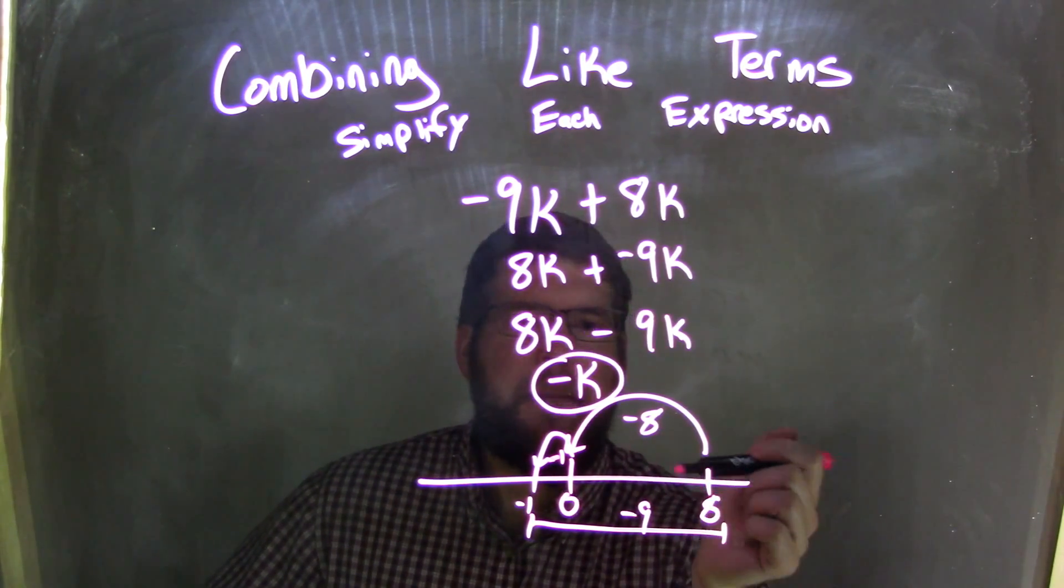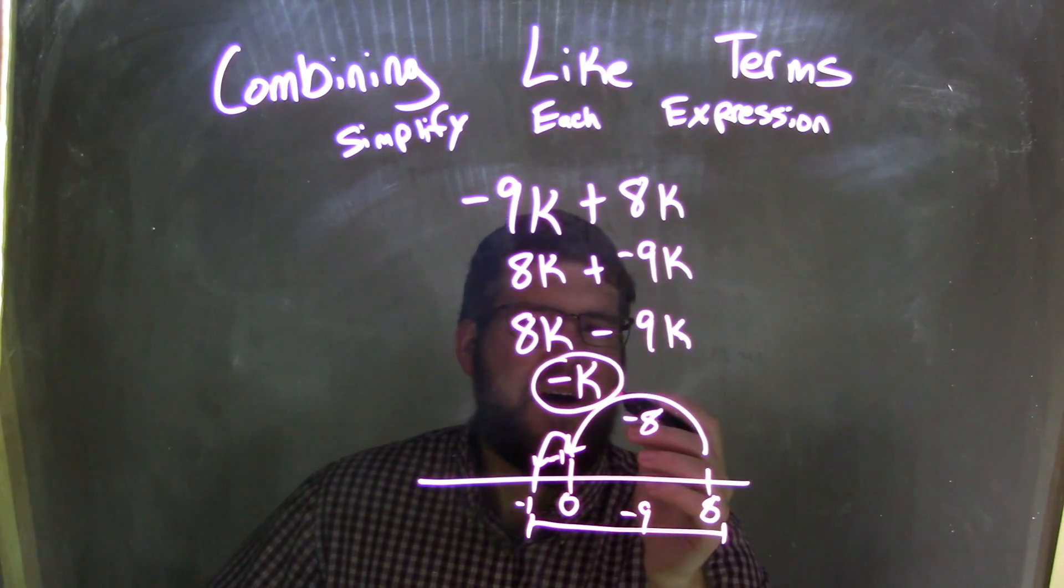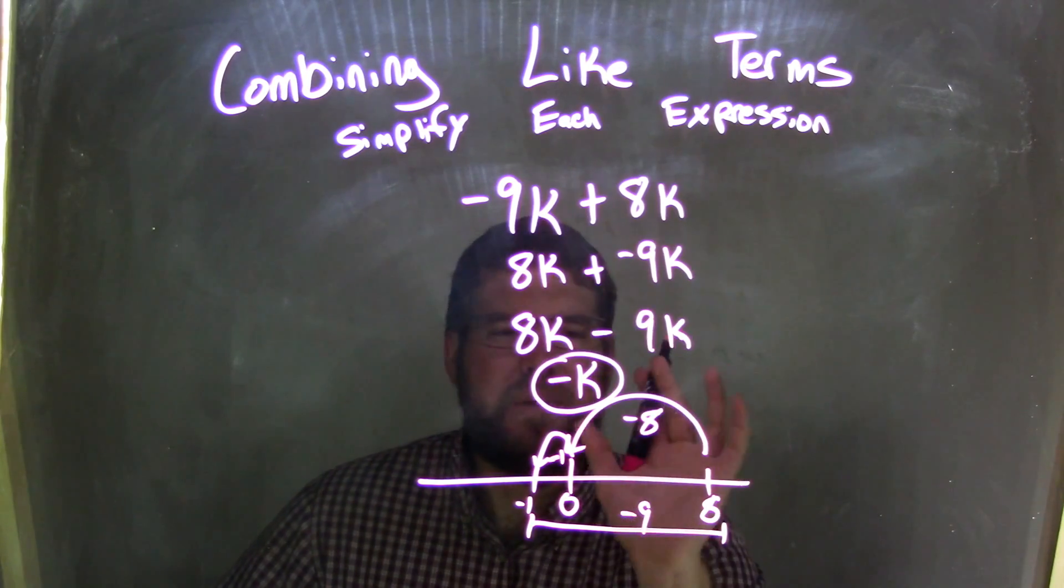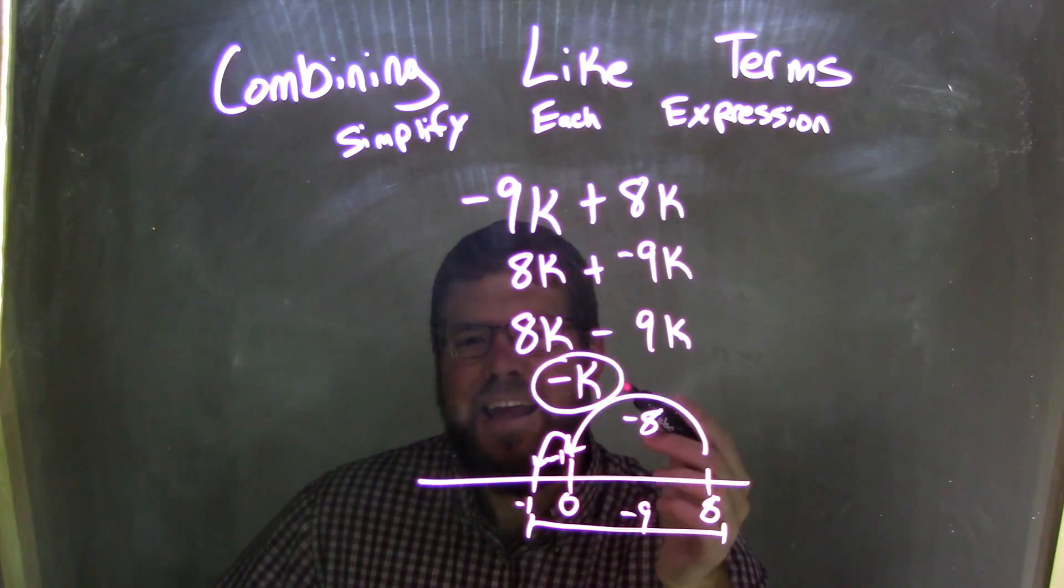And so 8k minus 9k would just be a negative k without that 1 out front. So we don't leave that 1 out front because when it's just one variable, that's just what it is. We leave it as just the variable itself. So we have our final answer to be negative k.